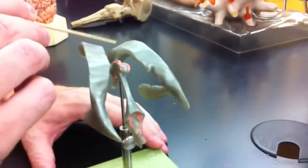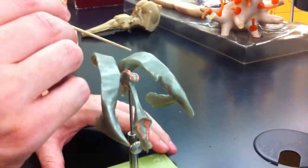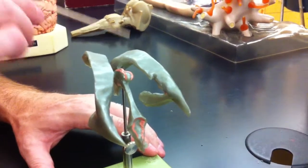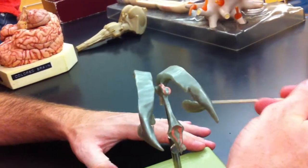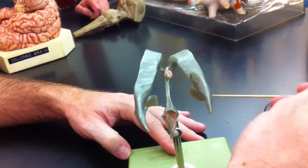This ventricle here is called the lateral ventricle. The lateral ventricle is actually divided into several parts. So we have the anterior horn of the lateral ventricle, we have the posterior horn of the lateral ventricle, and we have the inferior horn of the lateral ventricle.